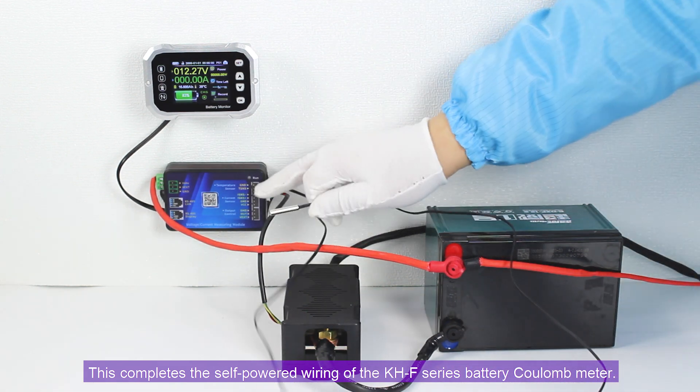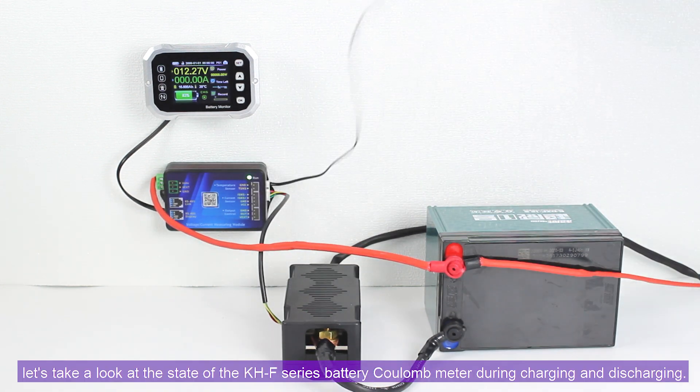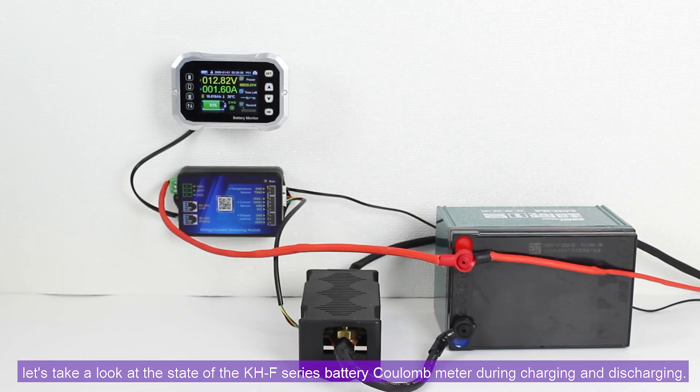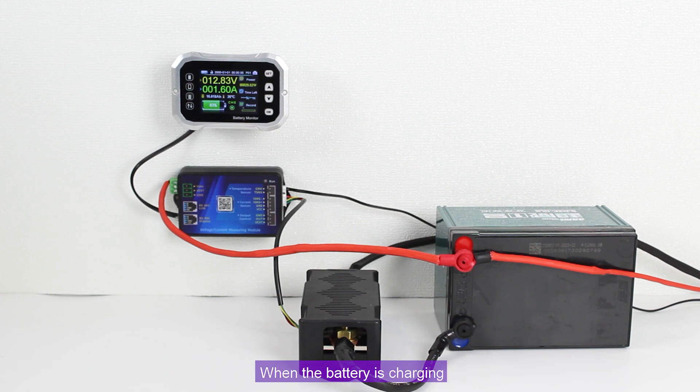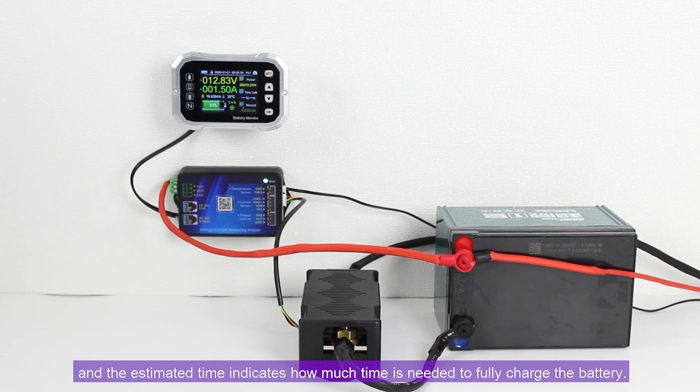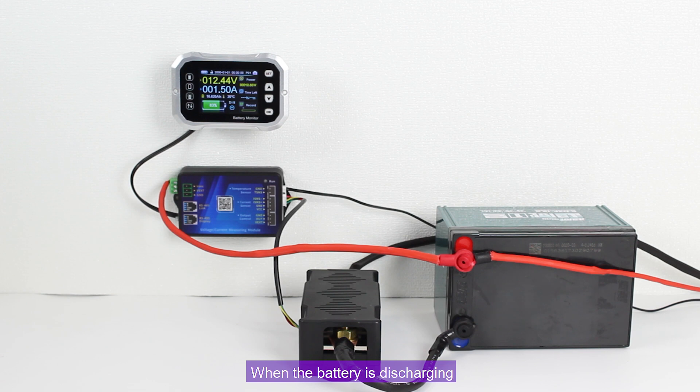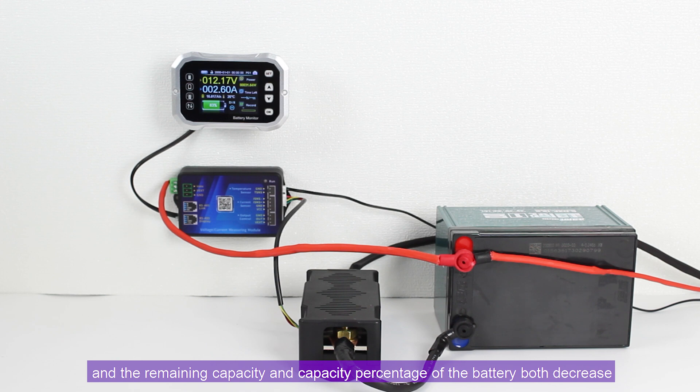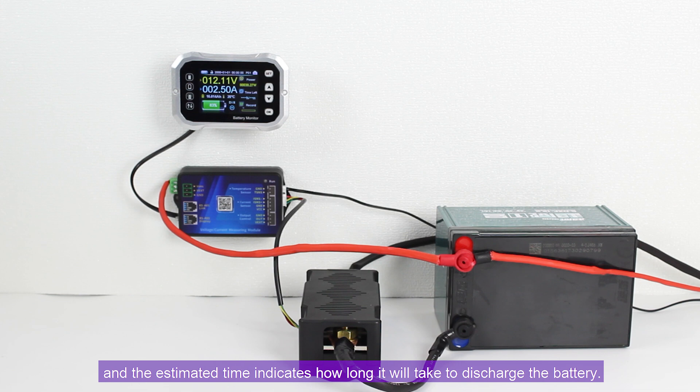Finally, let's take a look at the state of the KHF. When charging, the current color is green and the remaining capacity and capacity percentage of the battery both increase, and the estimated time indicates how much time is needed to fully charge the battery. When the battery is discharging, the current color is blue and the remaining capacity and capacity percentage of the battery both decrease, and the estimated time indicates how long it will take to discharge the battery. Thank you for watching.